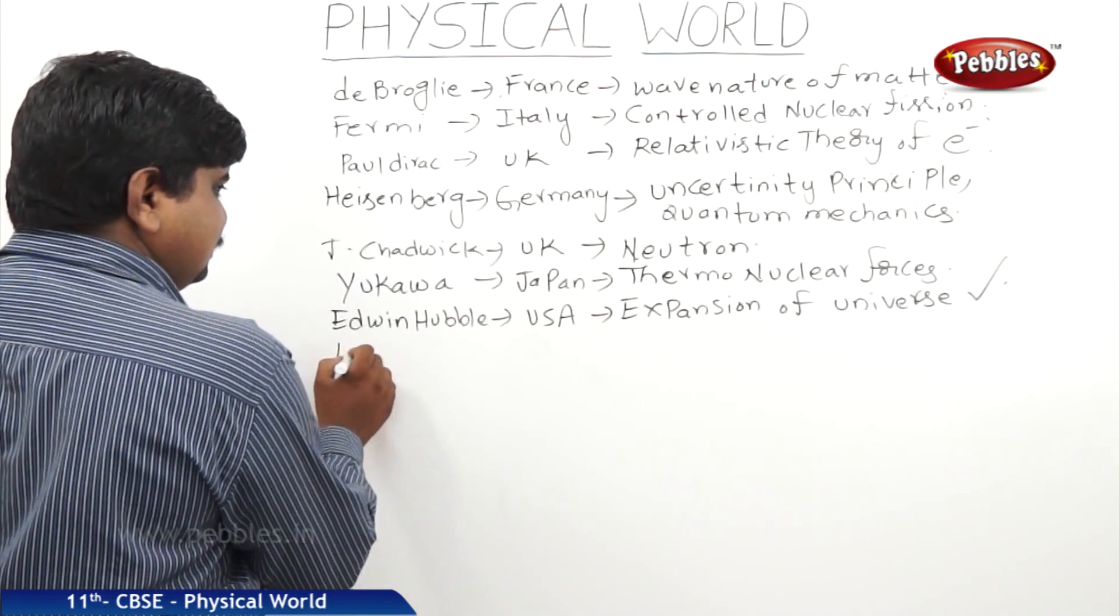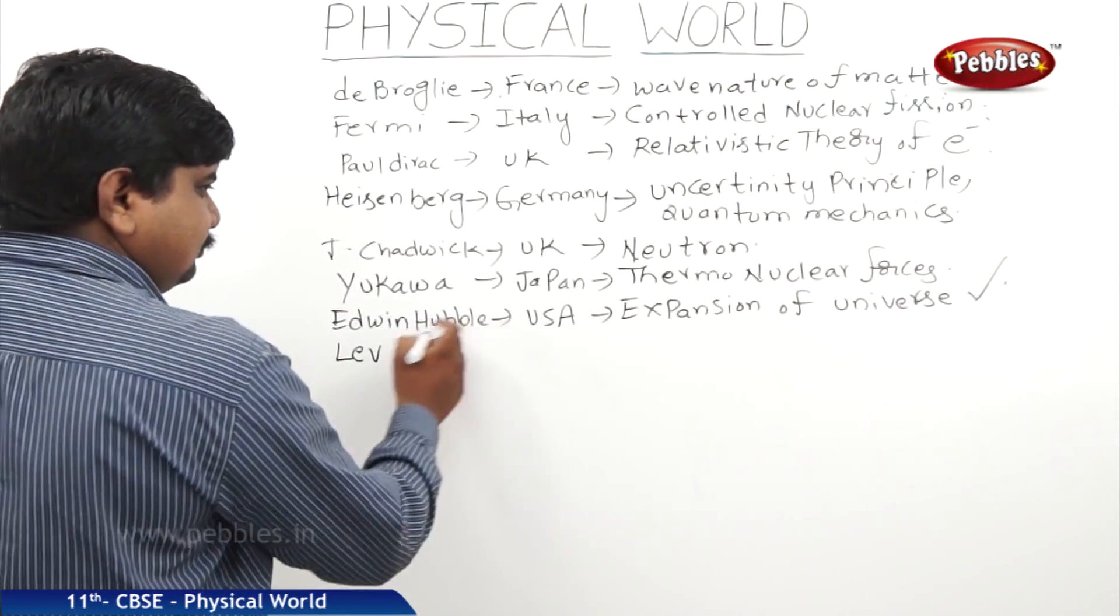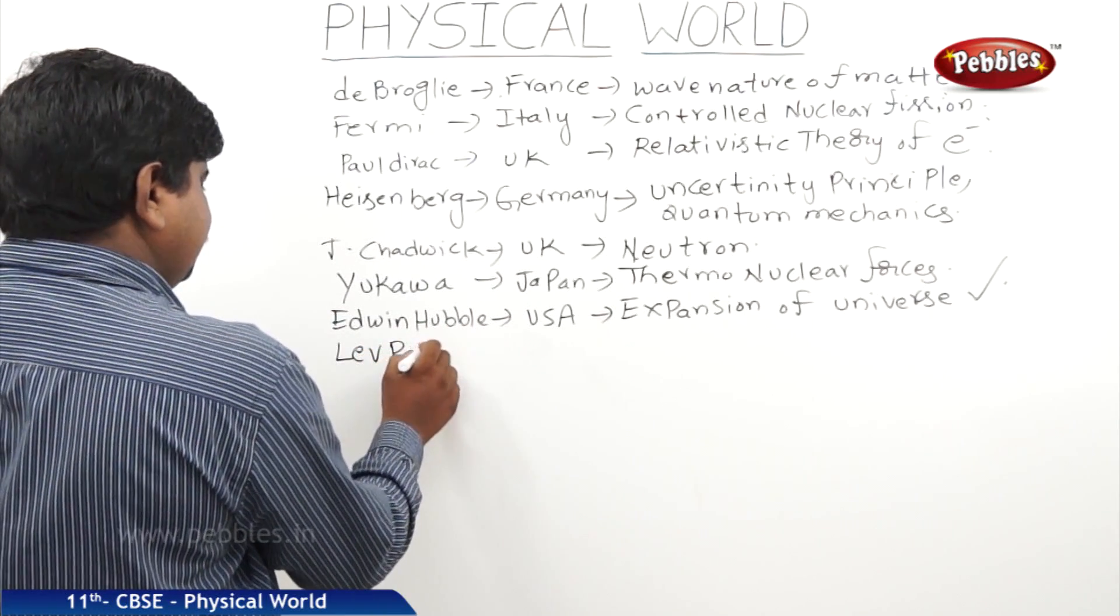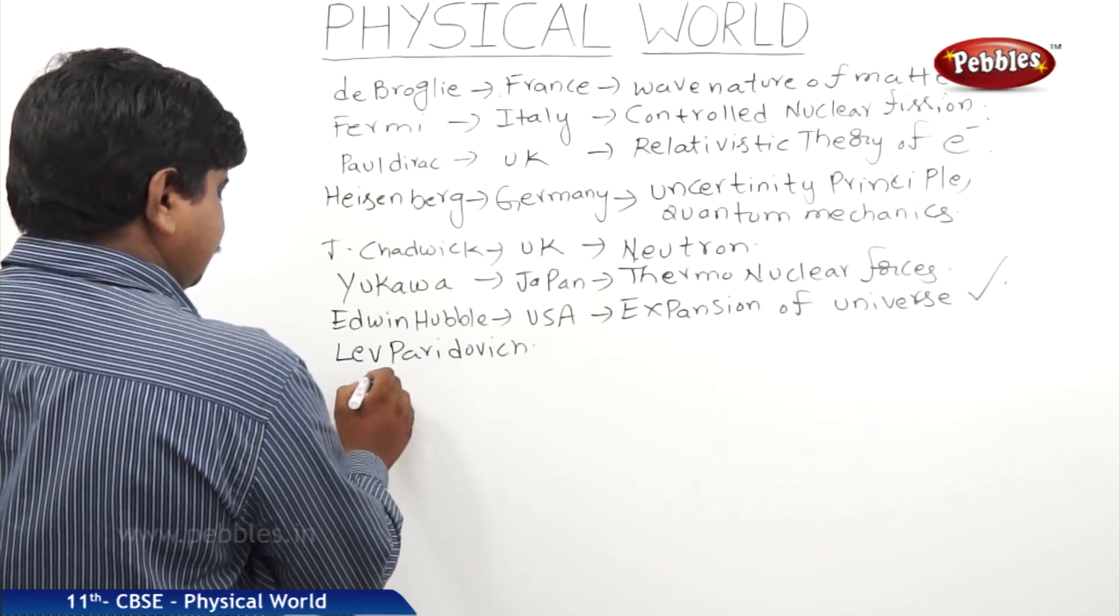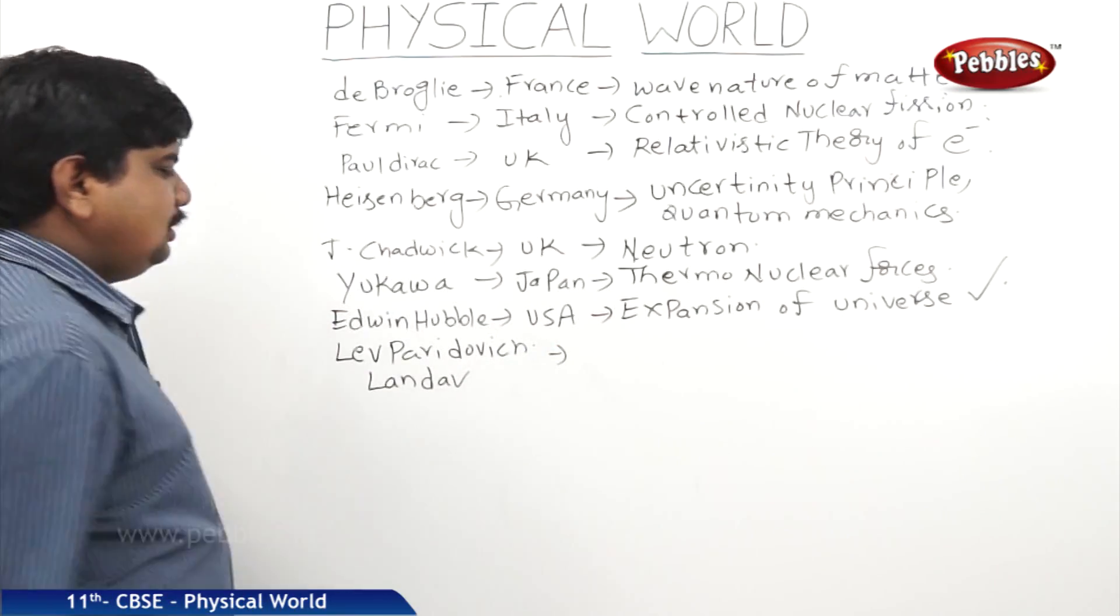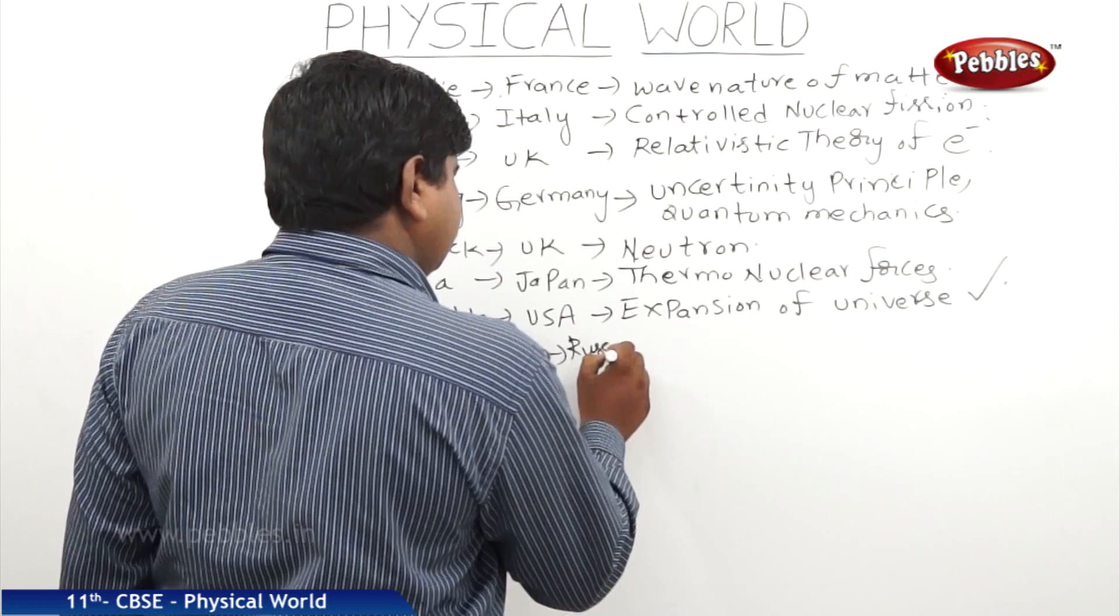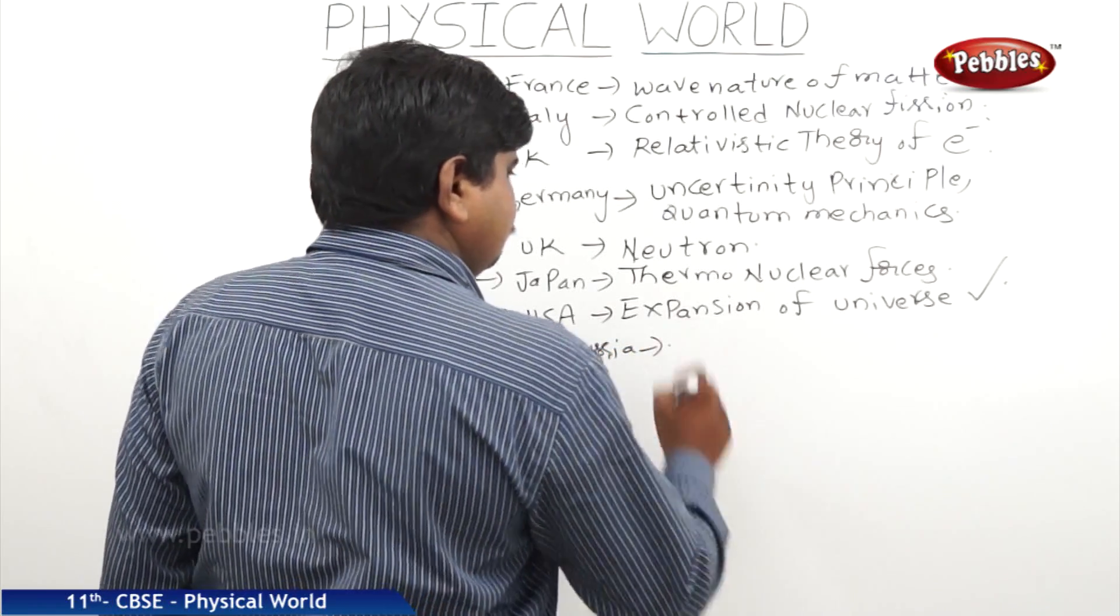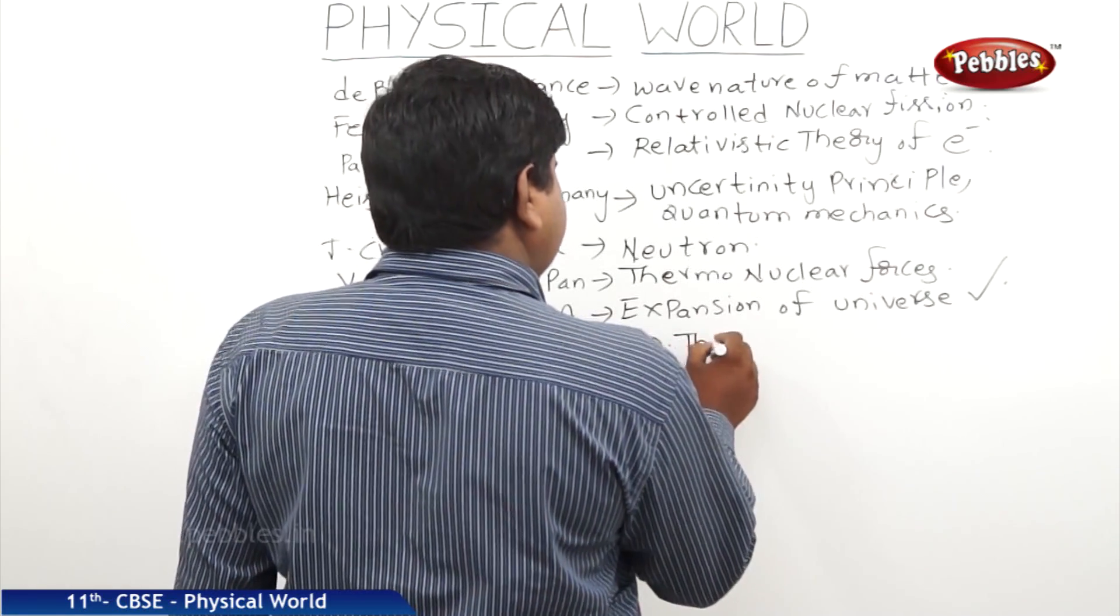The next scientist was Lev Petrovich Landau, he is from Russia. He discovered about the thermal condensed matter.